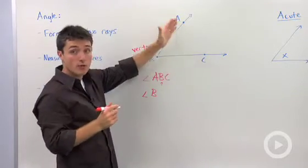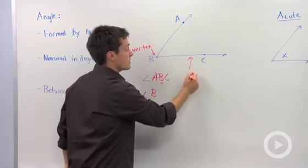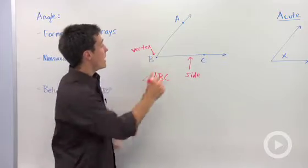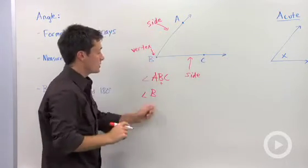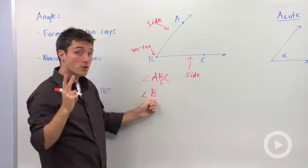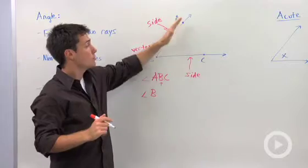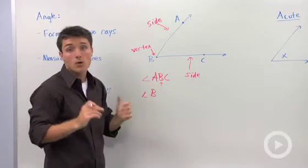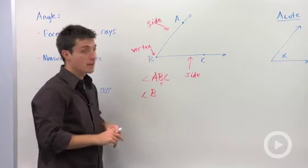So the rays form what are called the sides. So BC, ray BC, is one side of this angle, and ray BA is another side. So again, you can label an angle two different ways. One using three letters that make up the two sides and the vertex, making sure that your vertex is the middle letter, or if there aren't any other adjacent angles, you can just label it based on its vertex.